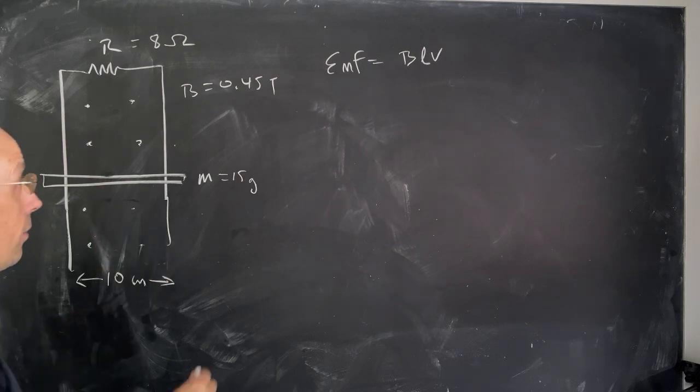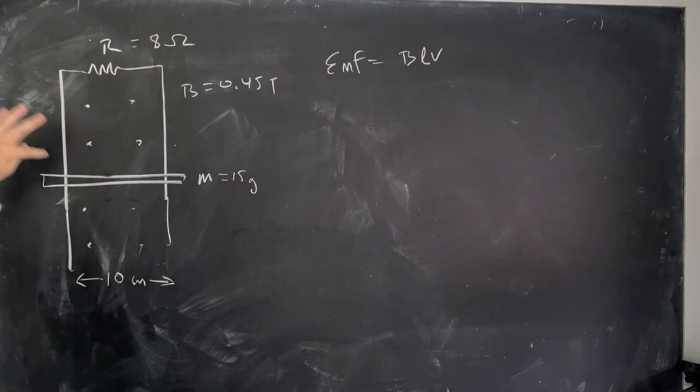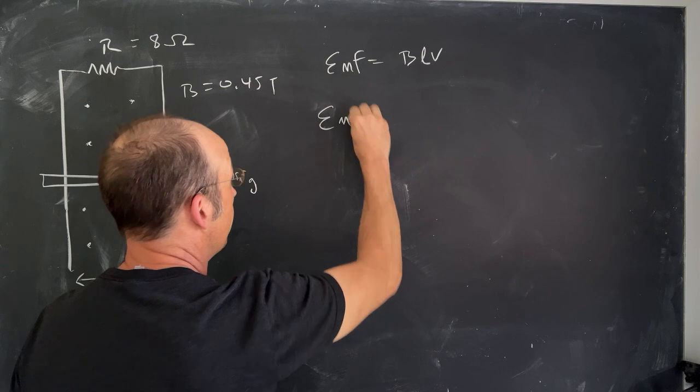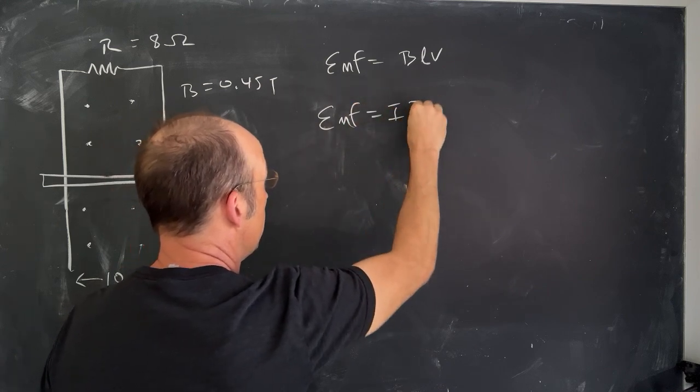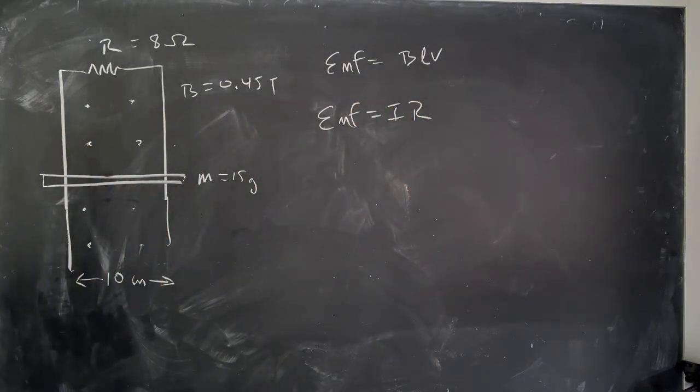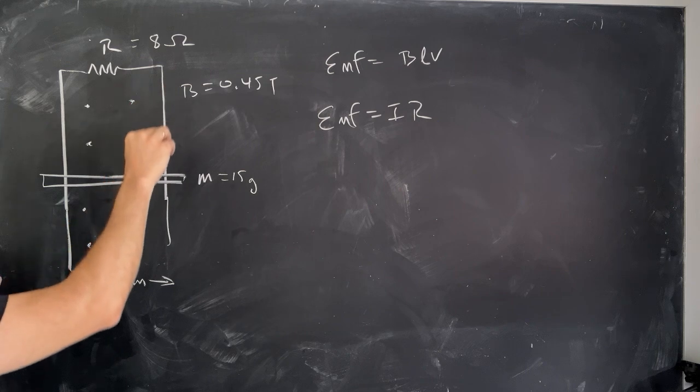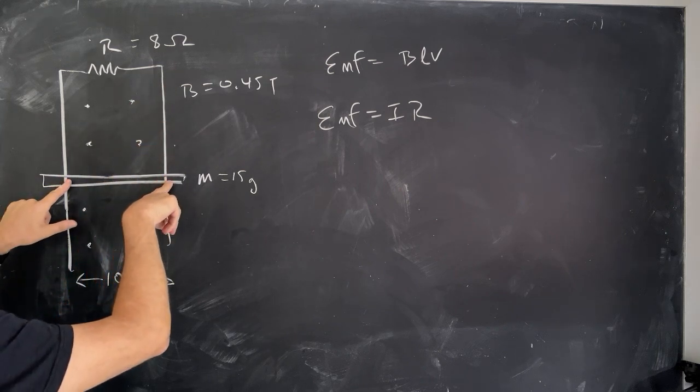Now, if there is an EMF, and I have a circuit, then I can say the EMF is I times R, right? It's the loop rule applies. So the EMF, I have a voltage across here.